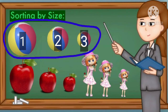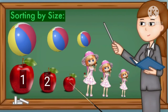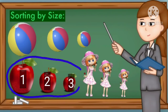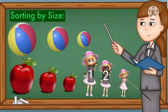This apple is the biggest one, so we have marked it one. This is smaller than one, so we have marked it two. This is smaller than two, so we have marked it three — so we have sorted all apples from one to three. Similarly for the next set: biggest is one, next is two, smallest is three — sorted from one to three.